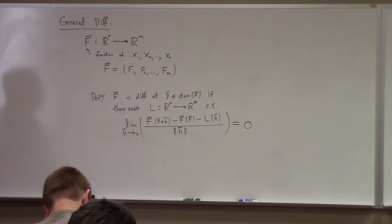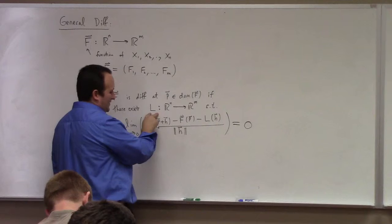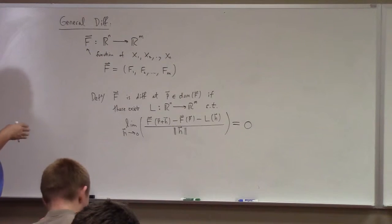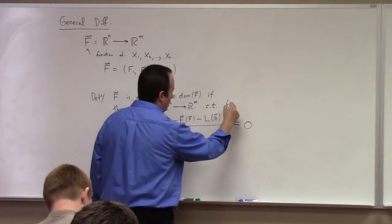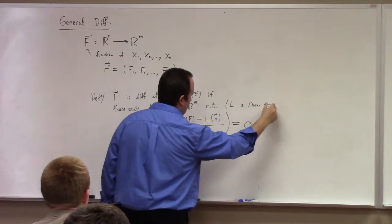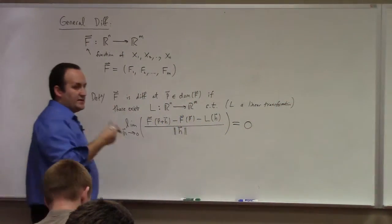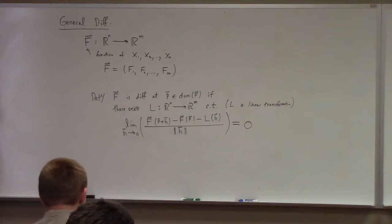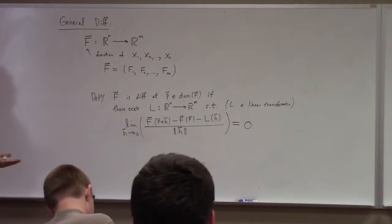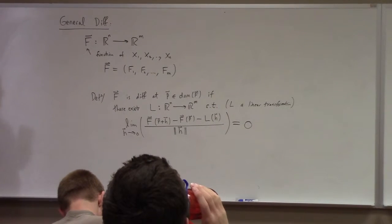So if this happens, if there is such a function L, fine print here, L actually, it's pretty important print, L has to be a linear transformation. So linear transformation. That just means that it behaves like a derivative. It breaks up sums and you can pull out scalars. So if there's a linear transformation, if this limit goes to zero, then f is said to be differentiable at p. That's what it means for f to be differentiable at p, is that there is such a function as L that does this.